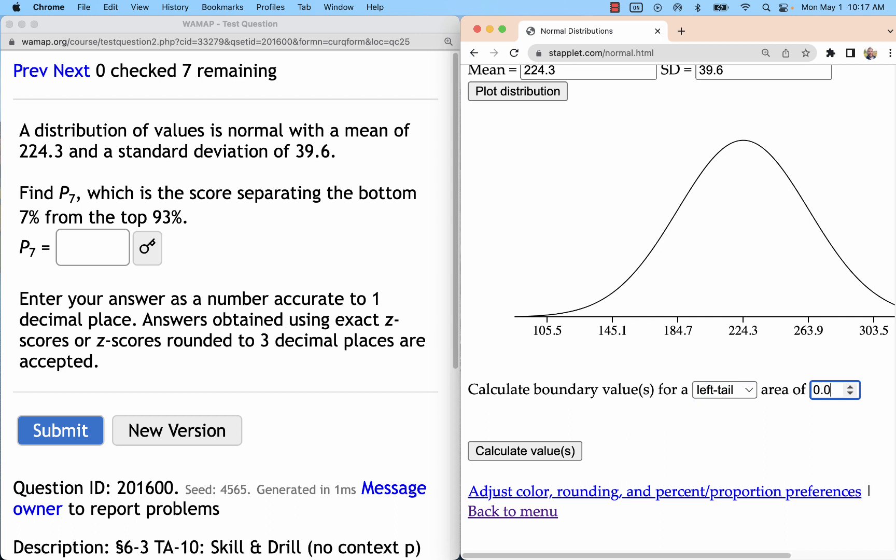Using that number that's given, that's 0.07 for the area or seven percent, and now we see that shading left. We've got our value that's the answer we want.